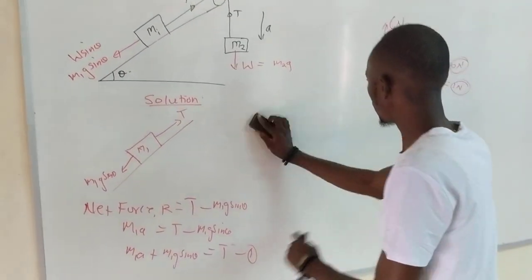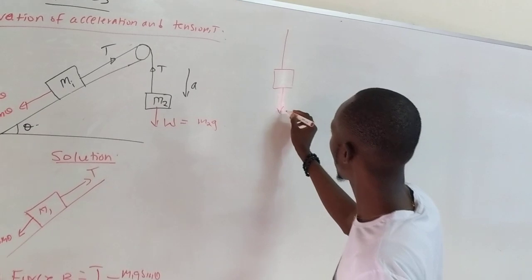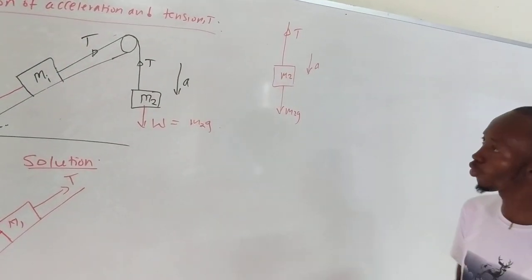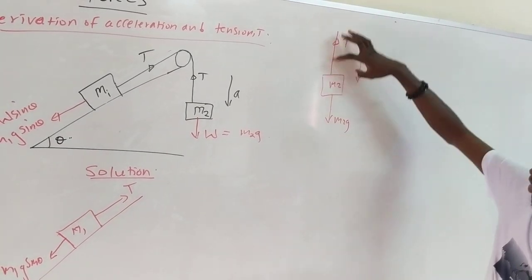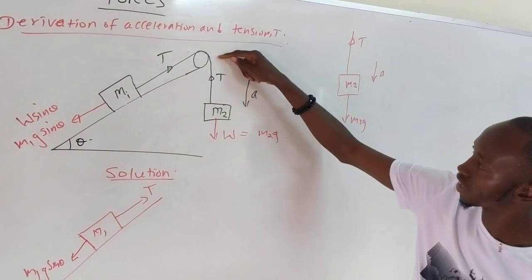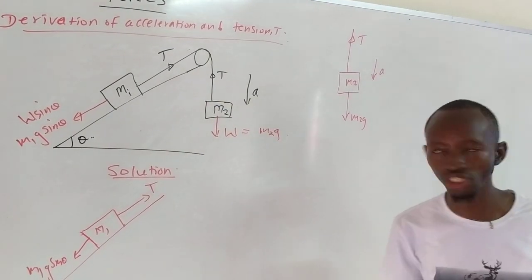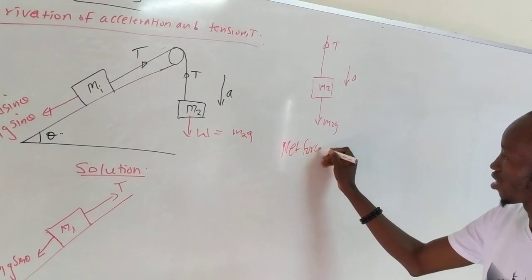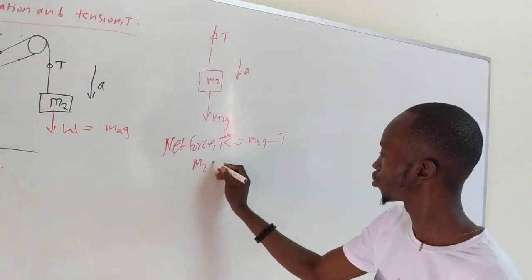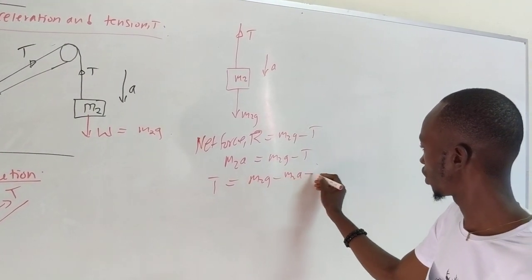Moving forward, let's consider the hanging mass M2 and its downward force. Here we have M2G acting downward and tension T acting vertically upward. Since the body is moving downward, this weight M2G must be greater than the tension T. So the net force R equals M2G minus T. Therefore M2A = M2G - T. Making T the subject by transposing, we get T = M2G - M2A. This gives us Equation 2.